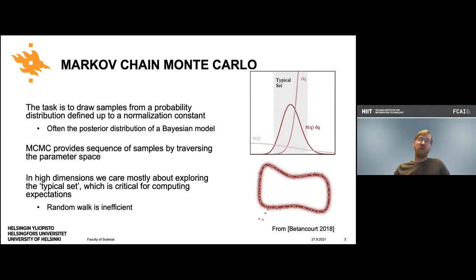The topic today is Markov Chain Monte Carlo. I expect most of you know what it's about. The basic thing is the task is to draw samples from a probability distribution defined up to a normalization constant. This is critically important especially in statistical modeling where these algorithms can be used to draw samples from the posterior distribution of a Bayesian model. These are iterative algorithms that traverse the parameter space by making small modifications, hoping to get a set of samples by recording the trajectory.